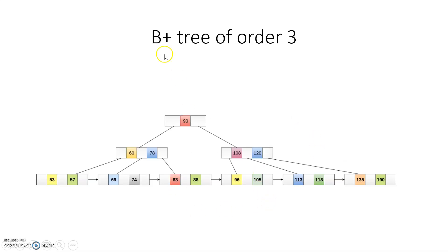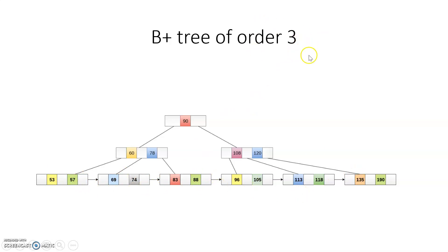This is a B+ tree of order 3. A B+ tree can have two orders: one order for internal nodes and another order for leaf nodes. The order for internal nodes restricts how many children they can have, while the second order specifies the number of keys that can be stored in the leaf nodes. If two orders are not given, you can consider the same order for both.